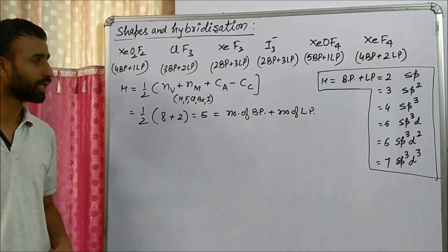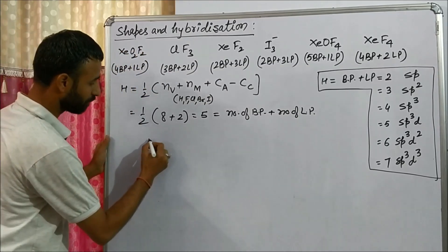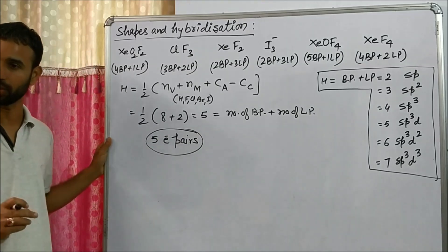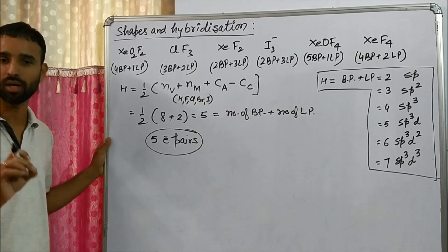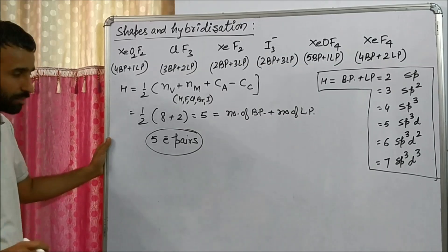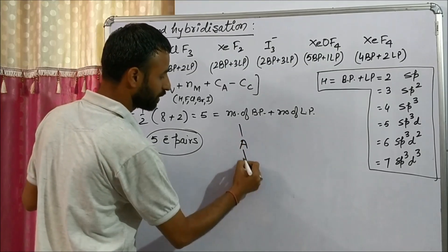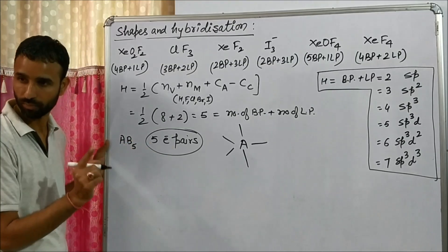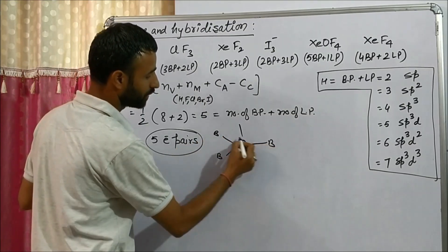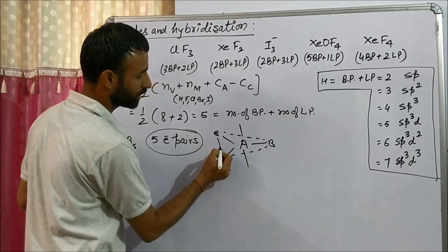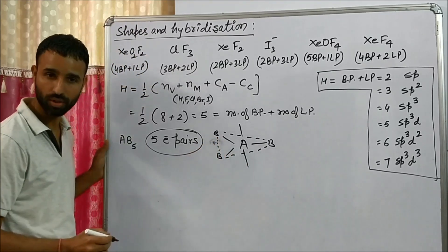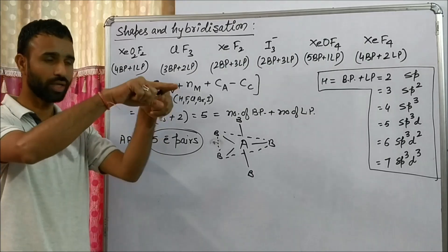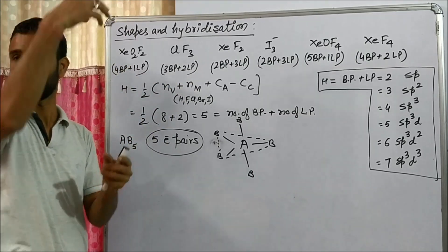Now, how do we arrange it? With a total sum of 5, meaning 5 electron pairs around the central atom, the arrangement or geometry is trigonal bipyramidal. In trigonal bipyramidal geometry, three bond pairs are in the same plane — that is the trigonal part — and there are two pyramids, one above and one below the plane.